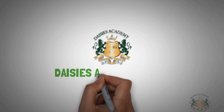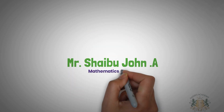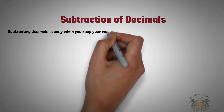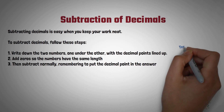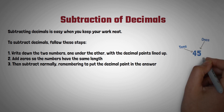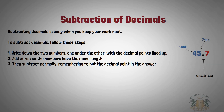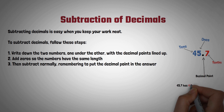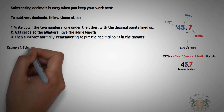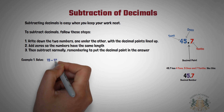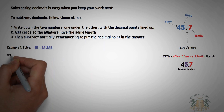Hello, welcome to Aces Academy online class with Shaibu John. Today we'll be looking at subtraction of decimals. Subtraction of decimals is similar to subtraction of whole numbers; the difference is putting the decimal point in the appropriate position or place. Now let's get started. For example one: solve 15 minus 12.325.